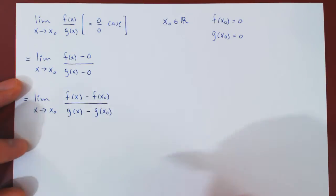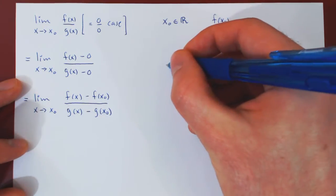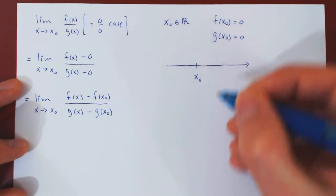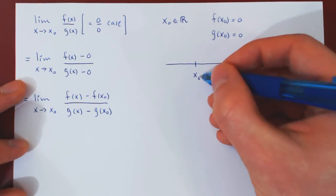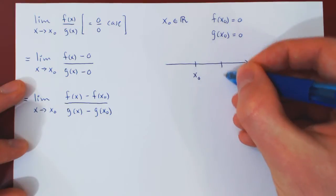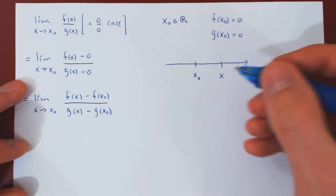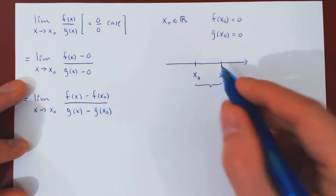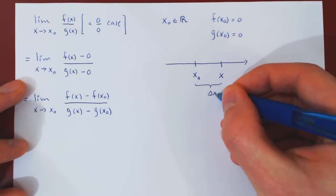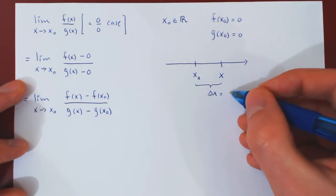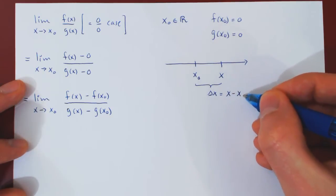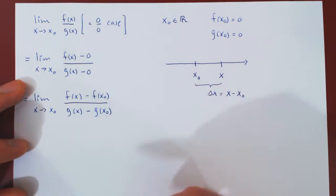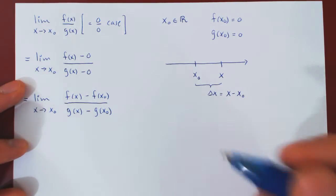We can actually make this happen. We have the point x₀. Say, just for argument's sake, that x is slightly bigger than x₀. Then the change in x, Δx, is going to be x - x₀.